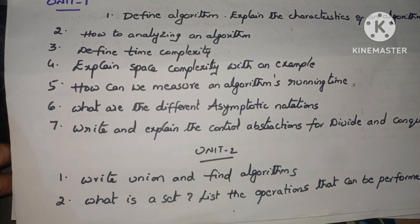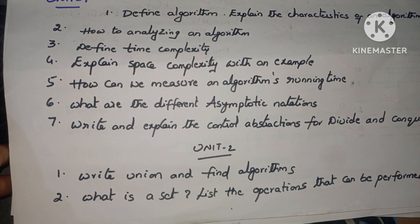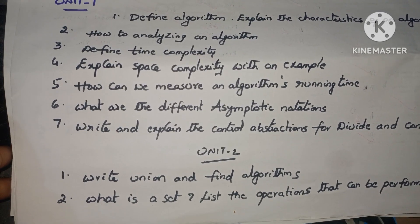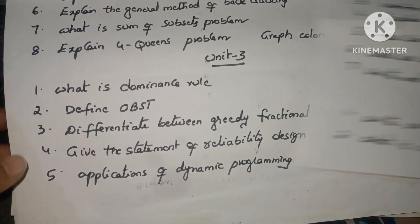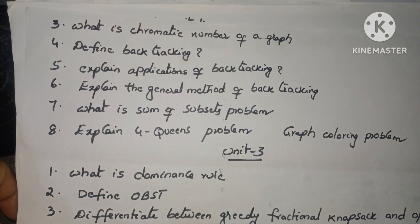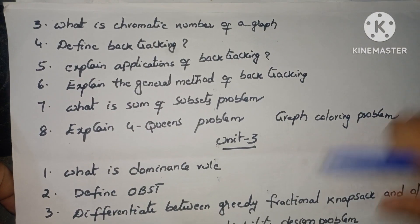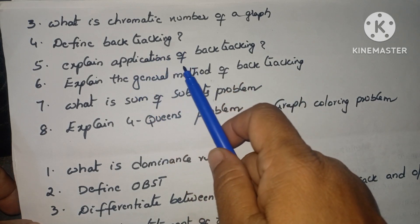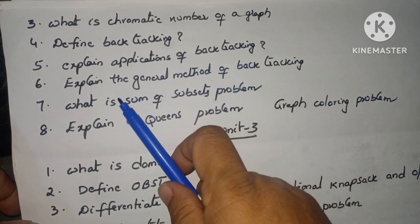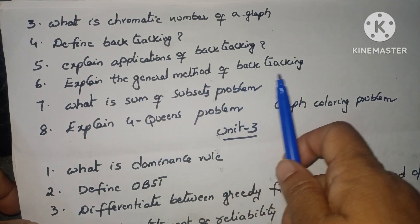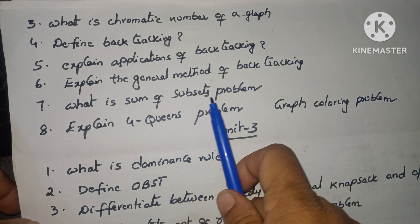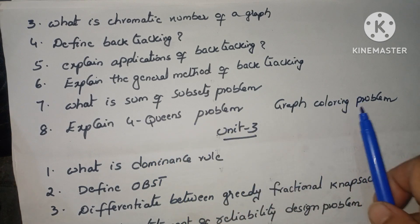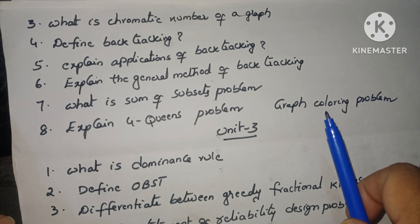Unit two questions: Write union and find algorithms. Second, what is a set? Explain the operations that can be performed on it. Third, what is the chromatic number of a graph? Define backtracking and explain its applications. Explain the general method of backtracking. What is the sum of subsets problem? Explain the four queens problem and also the graph coloring problem. These are some important questions in unit two.